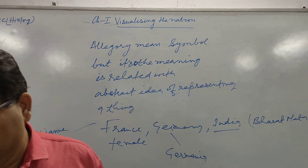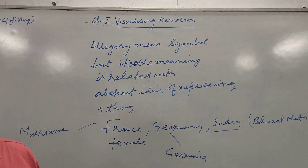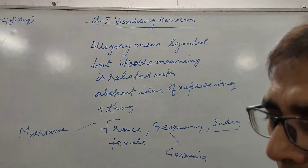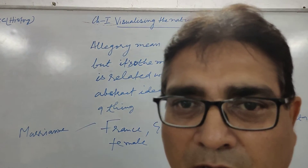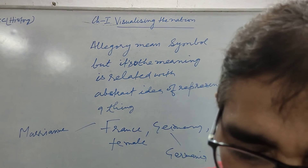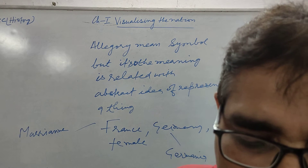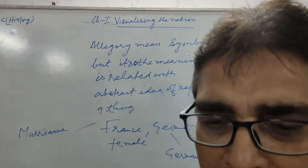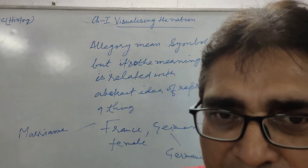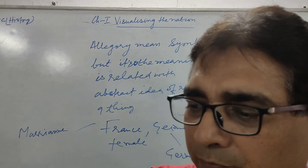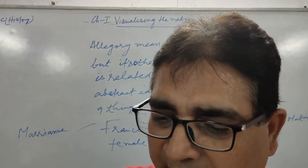Similarly, the German nation has the allegory of Germania. This goddess is wearing a crown made of oak leaves — the German oak stands for heroism. This is how the nation was visualized in the form of allegories.